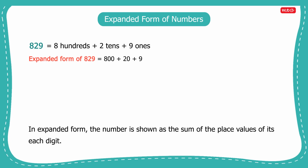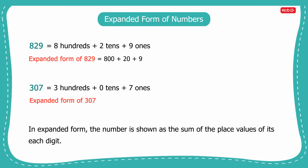Let us take one more number, 307. It can be written as 3 hundreds plus 0 tens plus 7 ones. So, the expanded form of 307 is 300 plus 0 plus 7, which is the same as 300 plus 7.